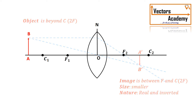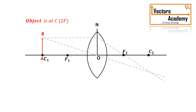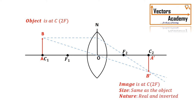If the object is brought even further closer, the image will move away from the lens. If the object is placed at c1, the image will be formed at c2. Hence the image will be inverted and of the exact same size as the object. So when the object is placed at the center of curvature, the image formed is real, inverted, and of the same size.